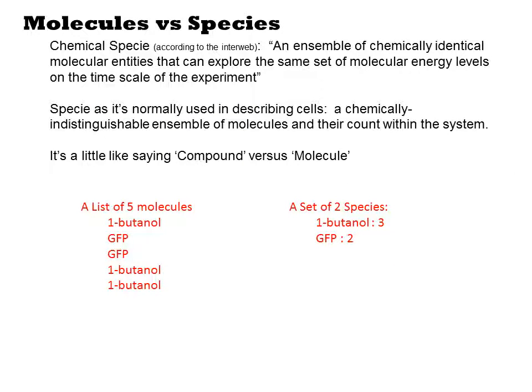Let's start with some basic definitions. The distinction between a molecule and a species is identical to that of instance and class in object-oriented programming. A molecule is an instance of a species. According to the interweb, a species is the ensemble of chemically identical molecular entities that can explore the same set of molecular energy levels on the timescale of the experiment.